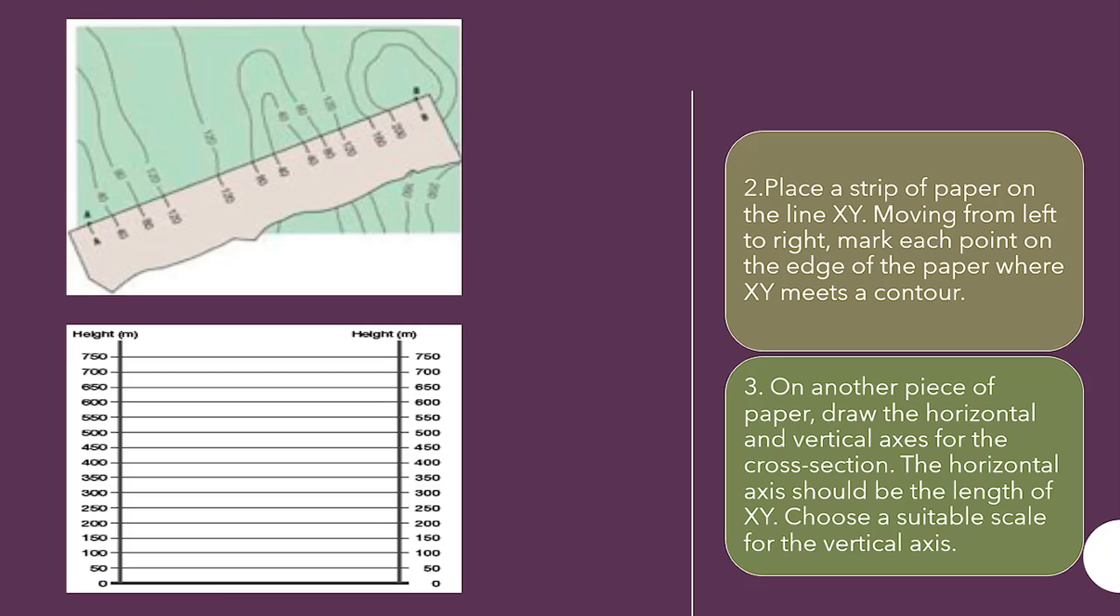On another piece of paper, draw the horizontal and vertical axis for the cross-section. There is a typo error. Axis is A-X-E-S. Just remember that. The horizontal axis should be the length of X, Y. So, choose a suitable scale for the vertical axis. If your contour lines have meters, you're going to choose a scale when you're making your axis points to plot it out that you can either convert or use meters or use something that is within that range.